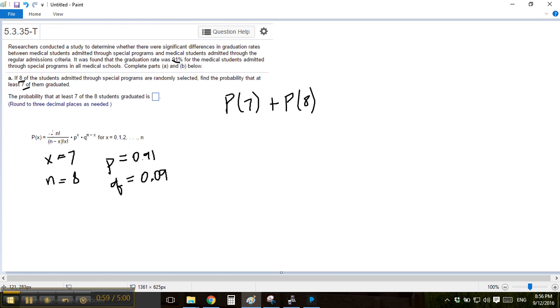Alright, so you'll have to do that twice. You have to do it once, put in 7 for x, and then change it and then put in 8 for x. Do it once to get this and once to get this.